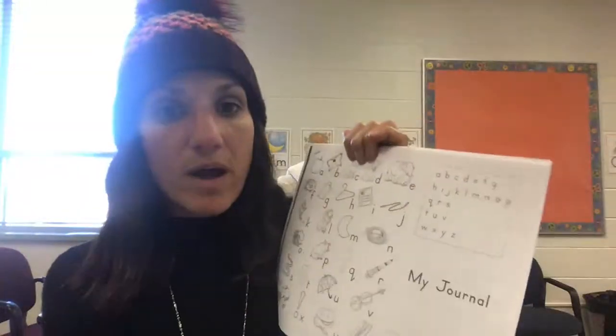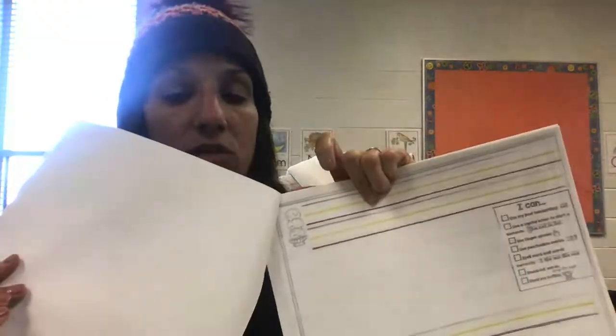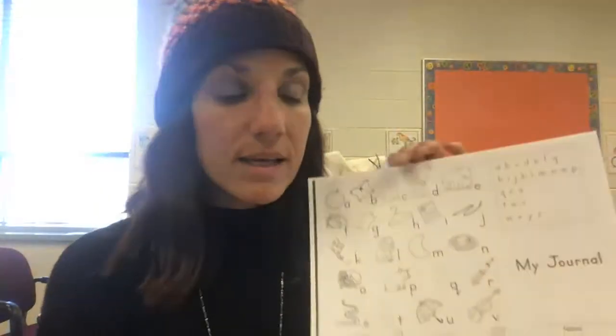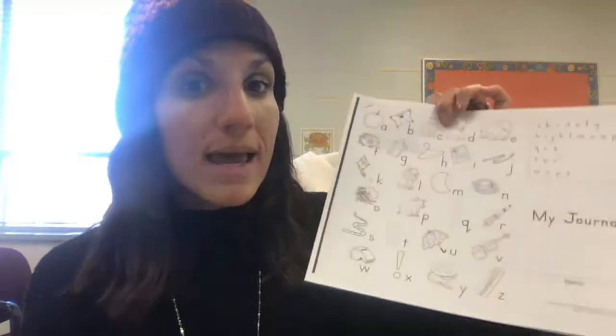And then we have our writing journal. We have a couple of different writing journals in here. Every day when we are writing, please have your child use this writing journal, because we have the space for the name and the date and then for the sentences. Pretty soon your child will also be using the back side as well, because our goal at the end of the kindergarten school year will be to write at least four to five complete sentences.